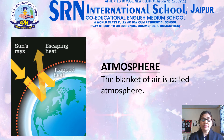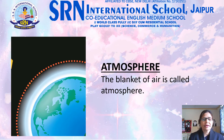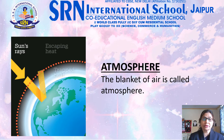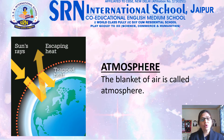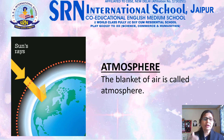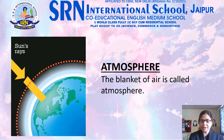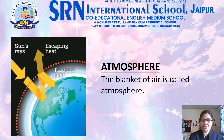Our Earth is surrounded by a blanket of air called the atmosphere. The atmosphere extends up to a height of about 300 km above the Earth's surface. As we go higher in the atmosphere, the amount of air becomes lesser. That's why mountaineers carry oxygen cylinders with them.